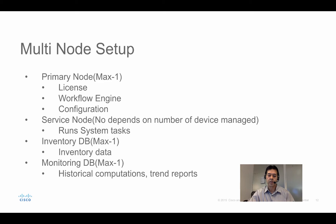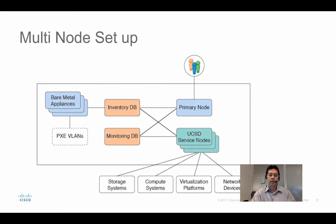The inventory database — maximum one — holds just the inventory data in a MySQL database. The monitoring database — again maximum one — holds historical utilization trend reports and similar data. This is what the multi-node setup looks like: the primary node where users come in, then your inventory and monitoring databases, then UCSD service nodes (can be multiple), and then if you have a bare metal agent it talks mainly to the inventory database via the PXE VLAN.